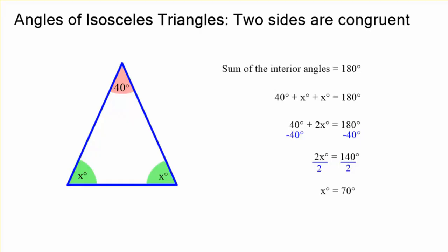And that really is the entire lesson. We'll do another example of it. But look, the x's are both 70. 70 plus 70 plus 40 is equal to 180.